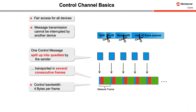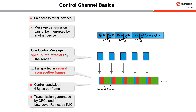The bandwidth of the control channel has a fixed size of four bytes per network frame, resulting in approximately 1.5 megabits per second, corresponding to up to 8,000 messages per second on the network. However, the external host controller's ability to process messages limits the message throughput of a particular device to about 500 to 1,500 messages per second, depending on the interfaces. Transmission of control messages is CRC protected and guaranteed message delivery is assured by low-level retries. The iNICnet control channel provides dedicated bandwidth for control communication in the network.